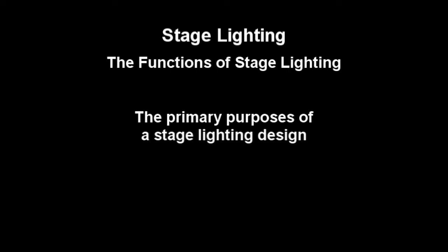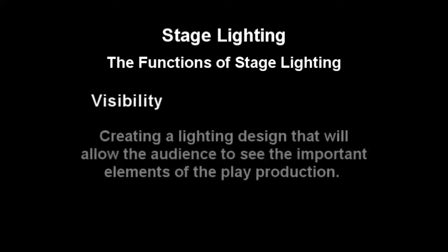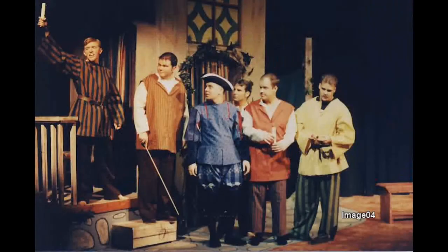The first function of stage lighting that we will consider is visibility. Naturally, one of the primary purposes for having stage lighting is to make it possible for the audience to see the action on stage. If the audience is unable to see the action, or if the lights are set at a level where the audience needs to strain in order to see the action, then all of the other functions of stage lighting are rendered moot. A lighting designer needs to have a strong sense of how much light must be directed into an area in order to give the proper illumination to the space and any object that may occupy that space.